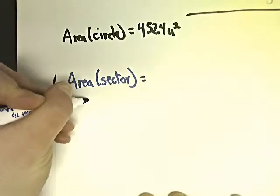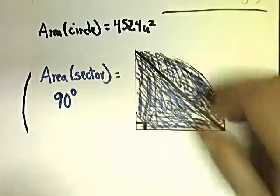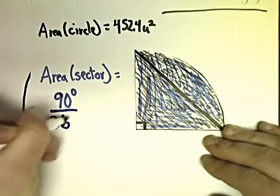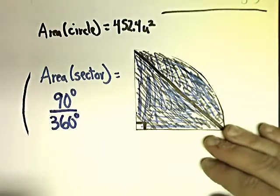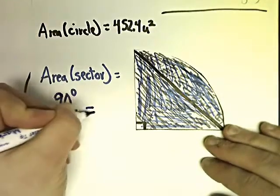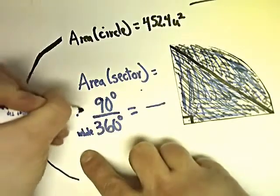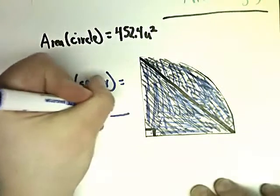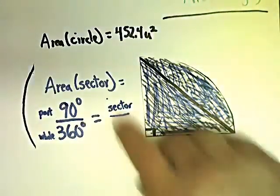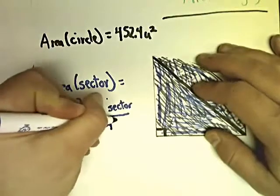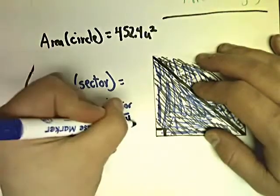I know that the central angle, being a right angle, is 90 degrees. The entire circle is 360. So really this is part over the whole — I'm going to set it up as part over whole. The whole circle area is 452.4 units squared, and the part I'm looking for is the sector area. So I'll write sector up here and 452.4 units squared down below.